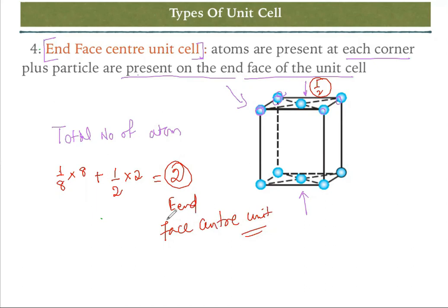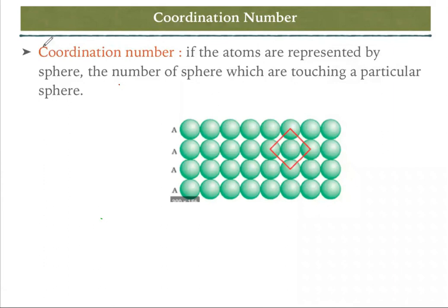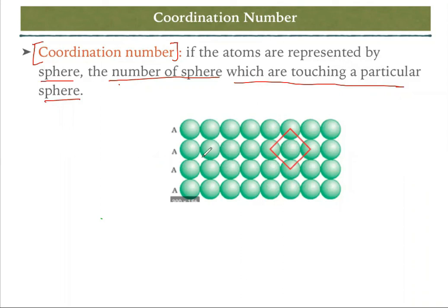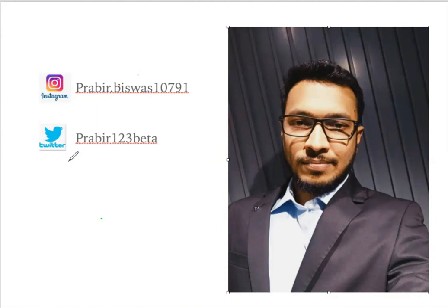Sometimes it is called end-center. Next we'll discuss the coordination number. The coordination number is defined as: if atoms are represented by spheres, it is the number of spheres touching a particular sphere. In this diagram, atoms are arranged and one particular atom is touching four other atoms — so the coordination number here is four.